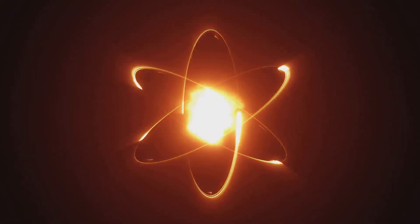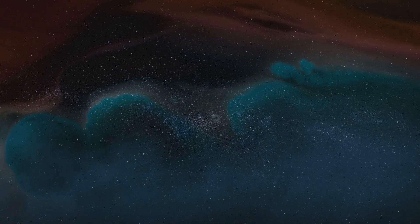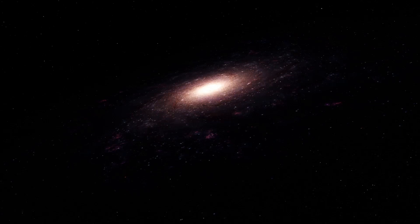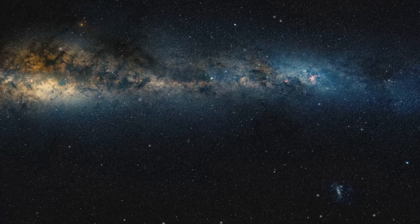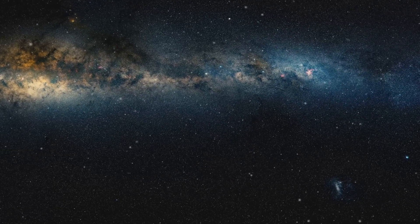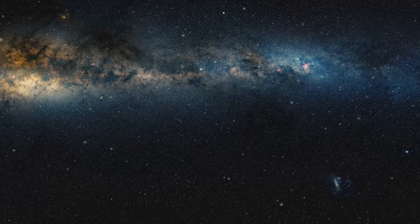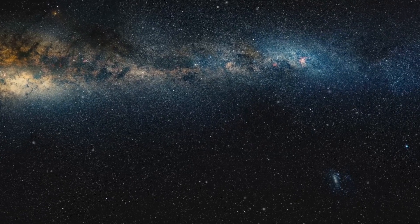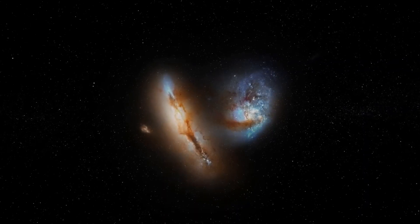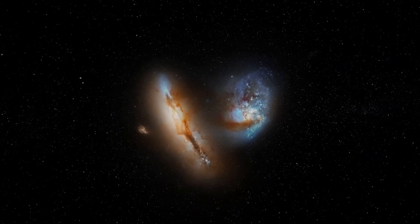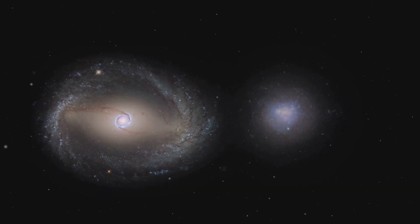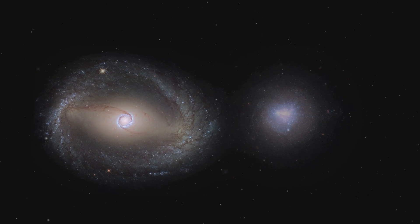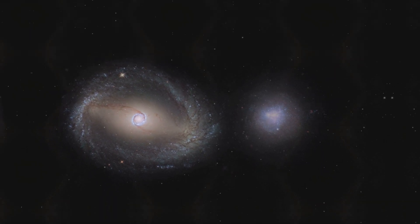Galaxies are vast collections of stars, gas, dust, and dark matter, all held together by gravity. Our own galaxy, the Milky Way, is a barred spiral galaxy, which means it has a central bar-shaped structure composed of stars. Galaxies are constantly moving and interacting with each other. Sometimes they even collide. Don't worry though, these collisions happen over millions of years and the stars are so spread out that they rarely collide with each other.